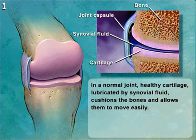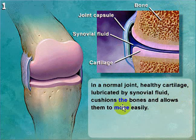Here we can see the bone position, joint capsule, synovial fluid, and cartilage. In a normal joint, a healthy cartilage lubricated by synovial fluid cushions the bone and allows them to move easily.